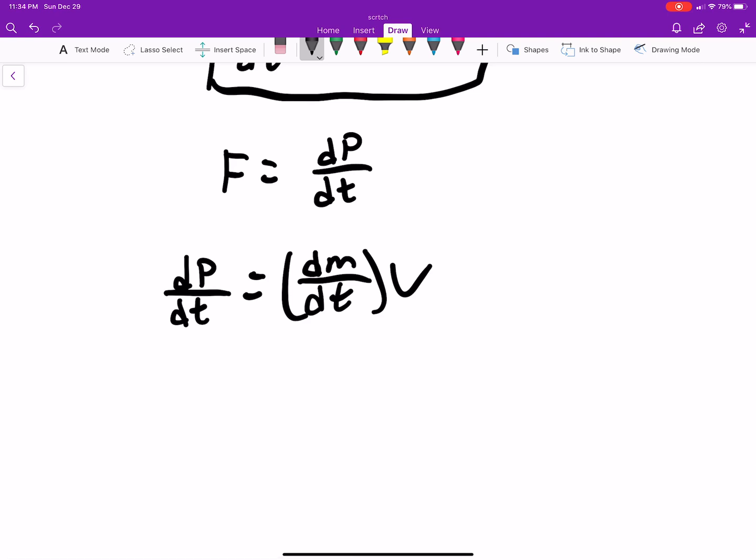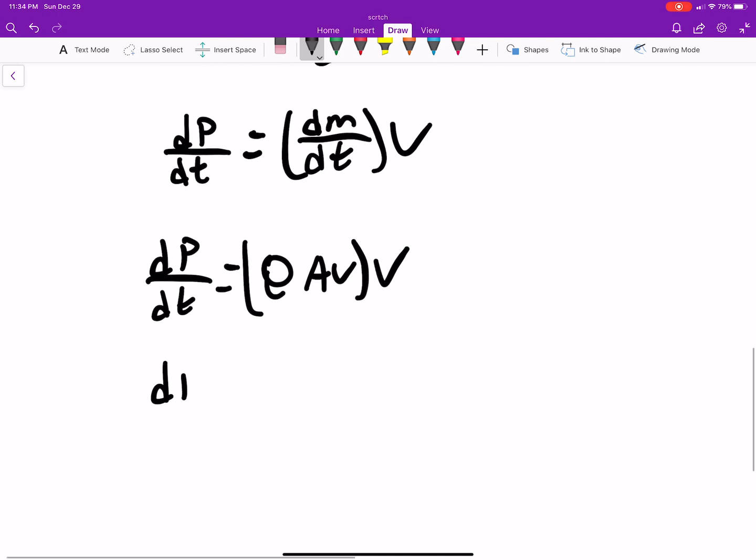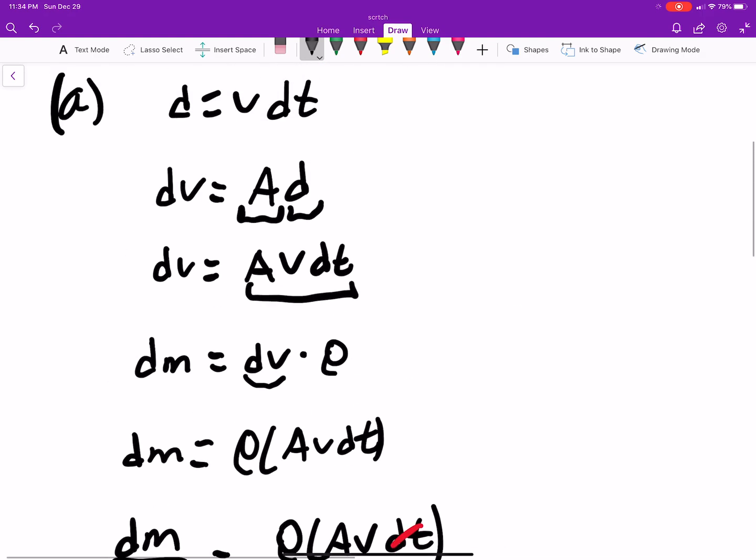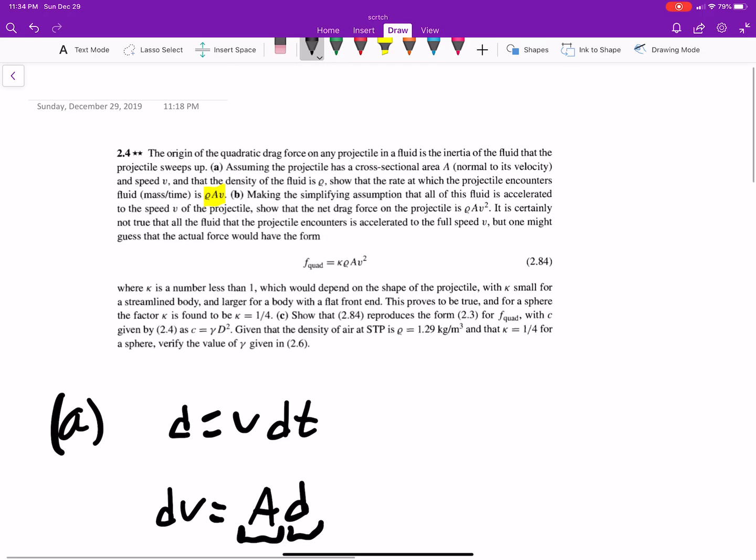Now, dP/dt is going to be the change in our mass over time times velocity, right? Well, dM/dt, we just found dM/dt. So we just substitute what we got before. So we're going to be the change in momentum, which is going to be equal to our force.